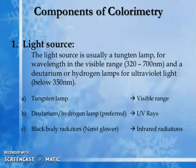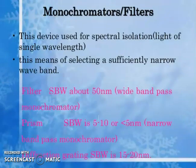Components of a colorimeter — light source: the light source is usually a tungsten lamp for wavelengths in the visible range (322–700 nm) and a deuterium or hydrogen lamp for ultraviolet light below 350 nm. Tungsten lamp covers the visible range; deuterium and hydrogen lamps cover the UV range; black body radiation covers the near-global infrared radiation.